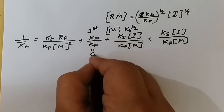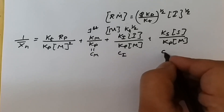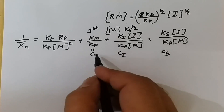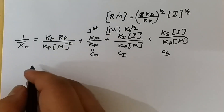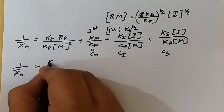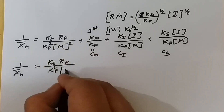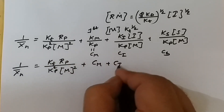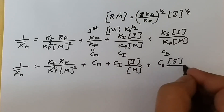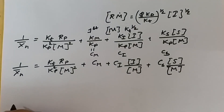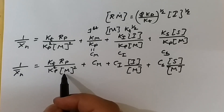We can substitute: km/kp = Cm (chain transfer constant for monomer), ki/kp = Ci (chain transfer constant for initiator), and ks/kp = Cs (chain transfer constant to solvent). These are all constants. So our relation takes the form: 1/x̄n = kt·Rp/(kp²·[M]²) + Cm + Ci·[I]/[M] + Cs·[S]/[M].